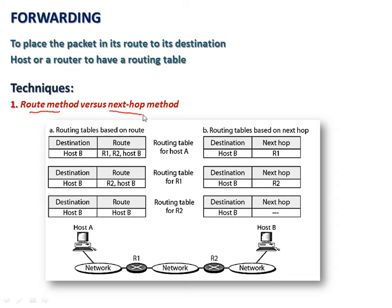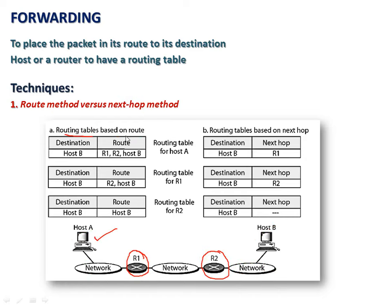The first method is the route method versus the next hop method. The next hop method simplifies the complexity of the routing table. In this internetwork, host A is connected with host B, with routers R1 and R2 in the path. In the general route-based routing table, when host A has a packet to transmit to host B, it should have information about the full path: R1, R2, and the final destination host B.